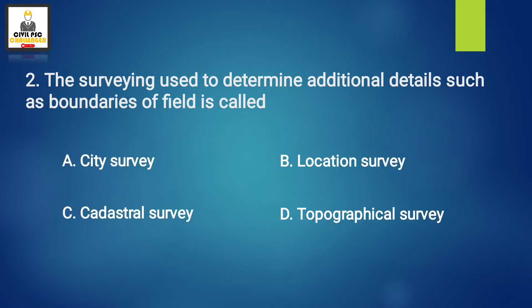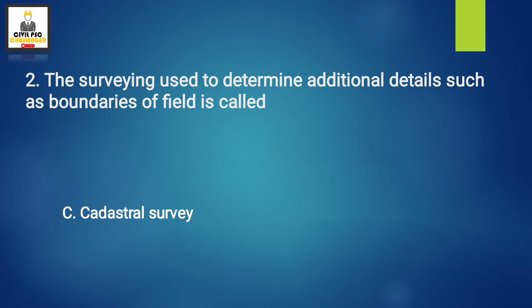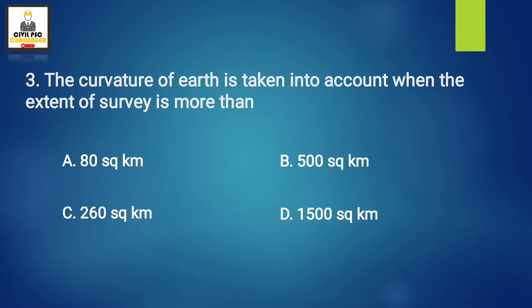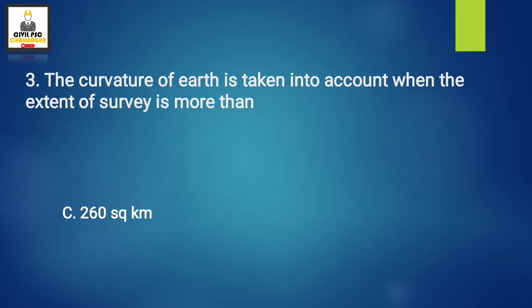Next question: the survey used to determine additional details such as boundaries of a field is called. Answer: Option C, cadastral survey. Next question: the curvature of the earth is taken into account when the extent of survey is more than. Answer: Option C, 260 square kilometers.